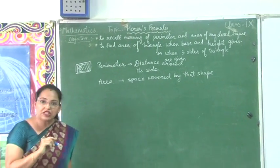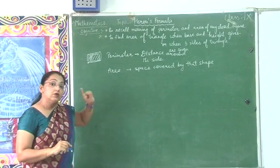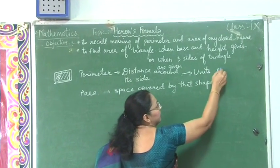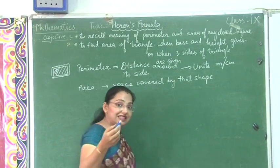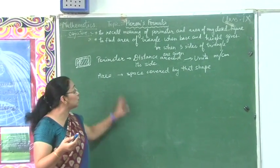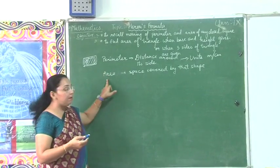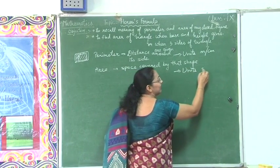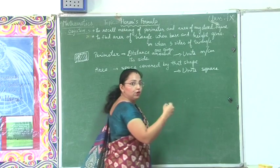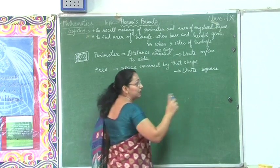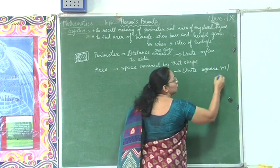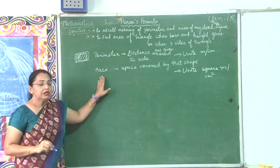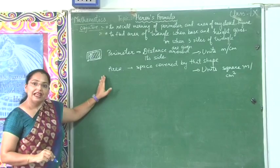Do you remember the units of these two things? Perimeter always has units in meters or centimeters — units we use for distance, because we are talking about distance around the shape. When we talk about area, its unit is always square units. If you are measuring the sides in meters, then it will be square meters, or square centimeters — it can also be written with the power 2.